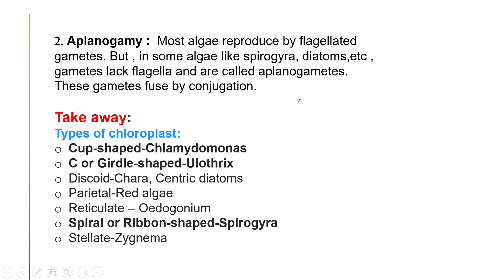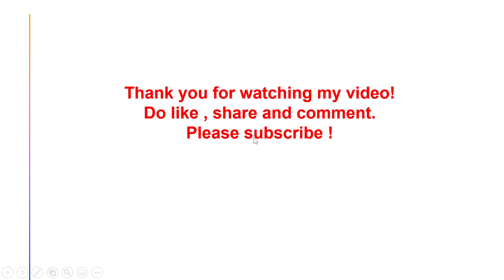Some important takeaways: the shapes of chloroplasts in different algae are very important for exams. Cup-shaped chloroplast is found in Chlamydomonas; girdle-shaped in Ulothrix; discoid in Chiral and centric diatoms; parietal in red algae; reticulate in Oedogonium; spiral or ribbon-shaped in Spirogyra; and stellate-shaped in Zygnema. Thank you for watching — please like, share, comment, and subscribe.